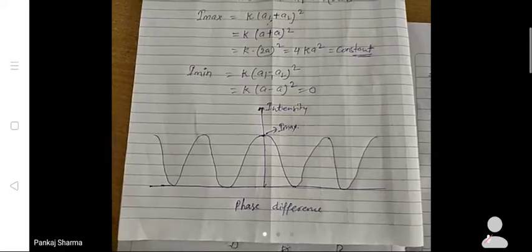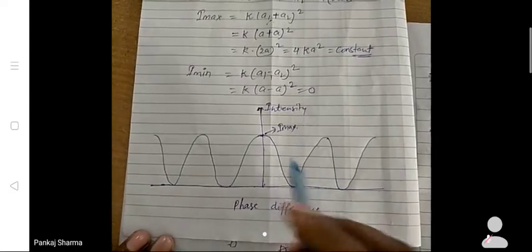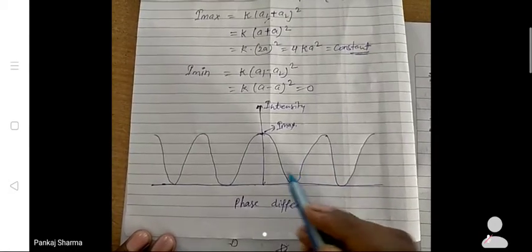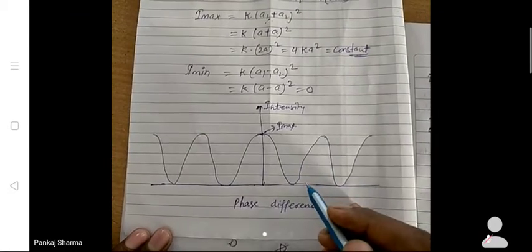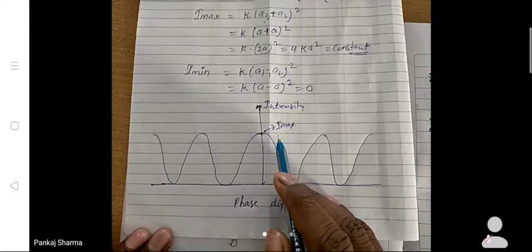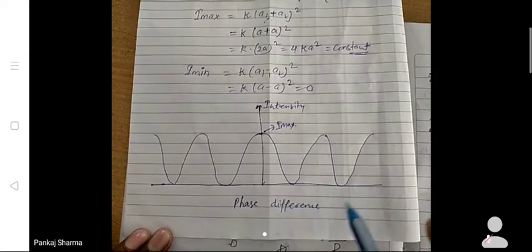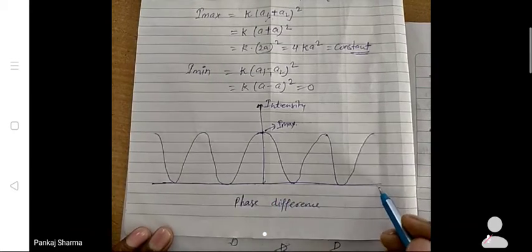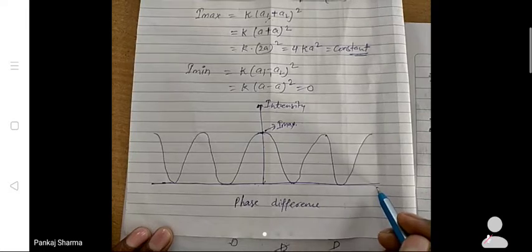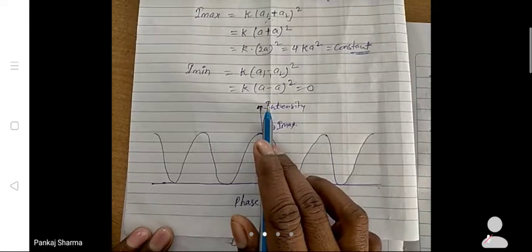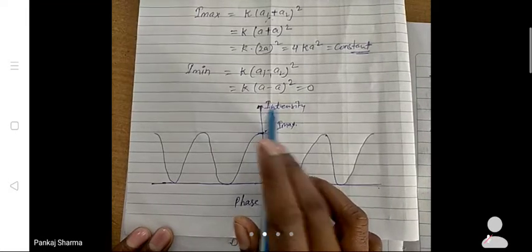Now we have the intensity graph with the phase difference. The x-axis is along phase difference and the y-axis is along intensity.